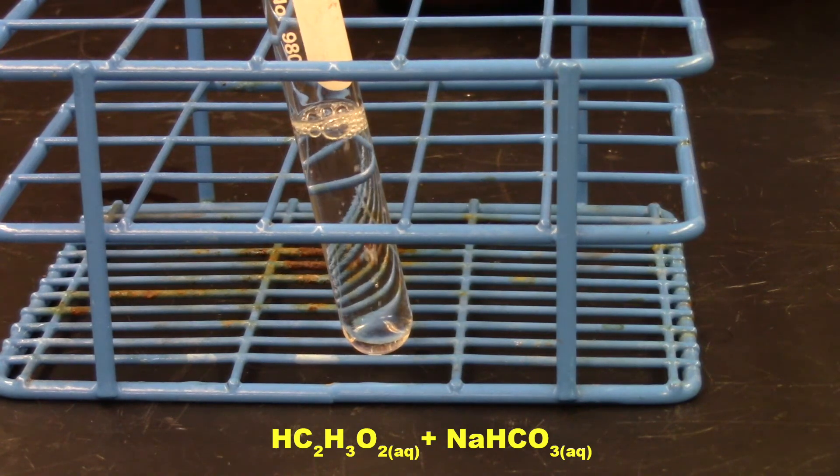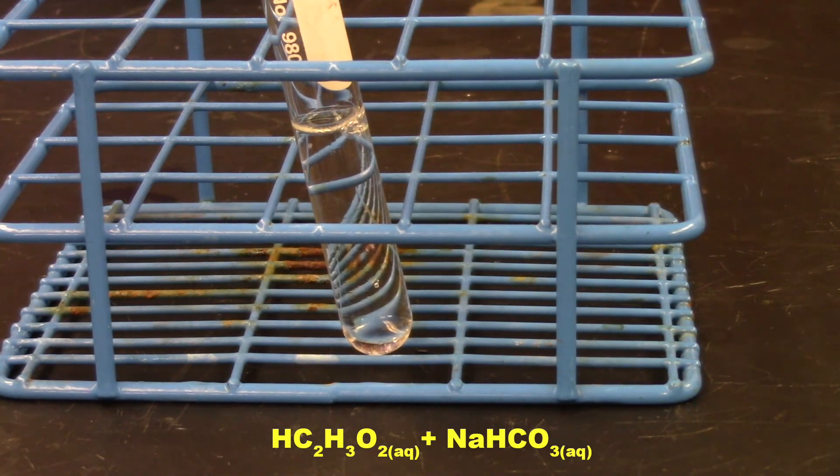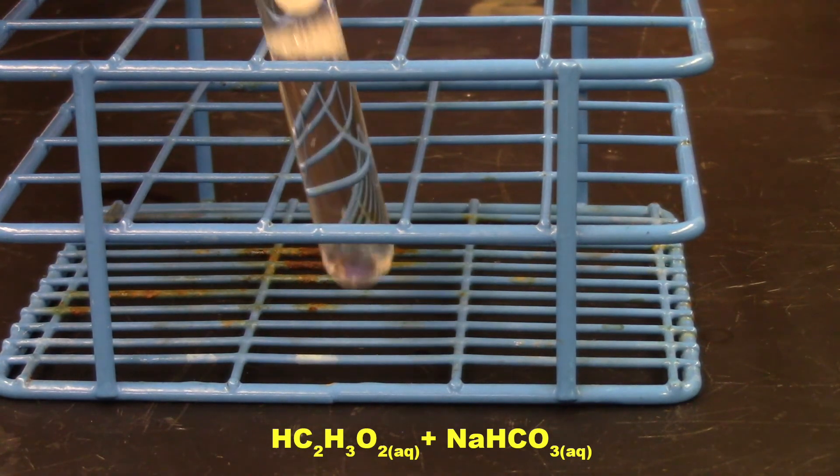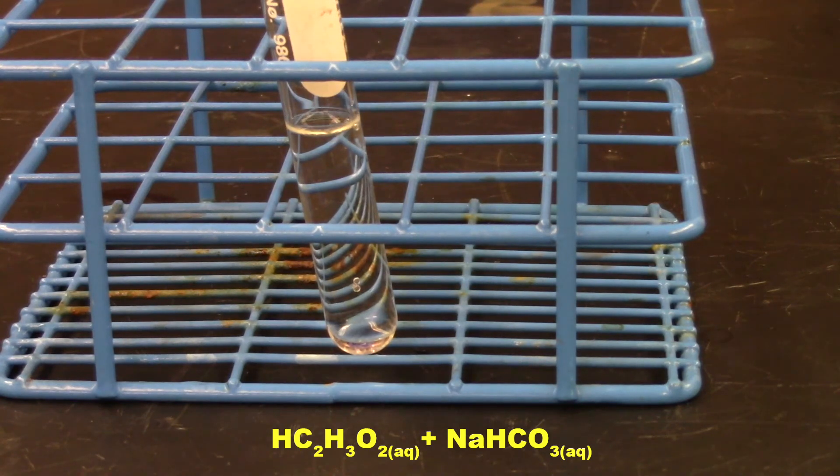See it? You see it? Bubble formation. Let's see if we can get some more. So when you add sodium bicarbonate to acetic acid or vinegar, you get lots of bubbles. And those bubbles are CO2. And it's kind of still going. You can kind of still see it. So that's pretty cool. Bubble formation.